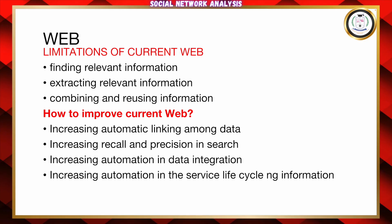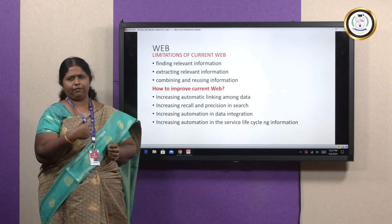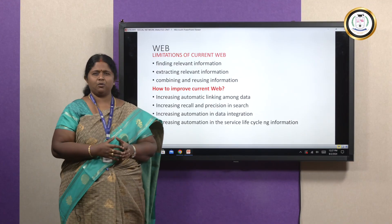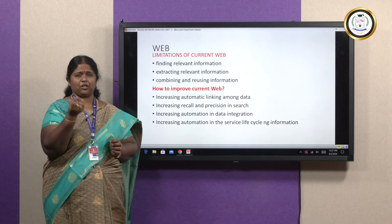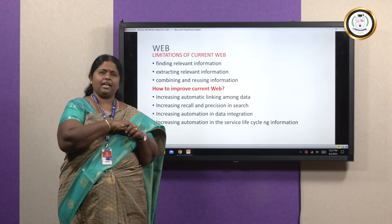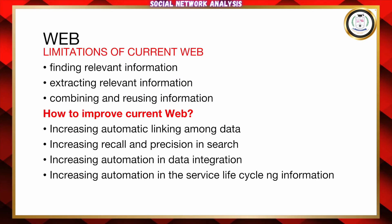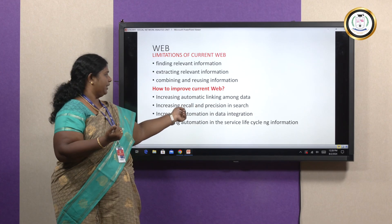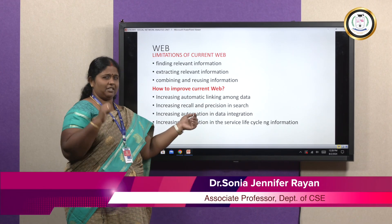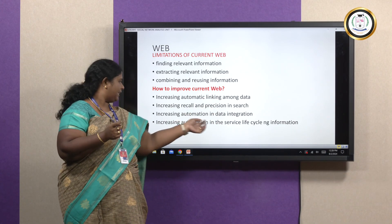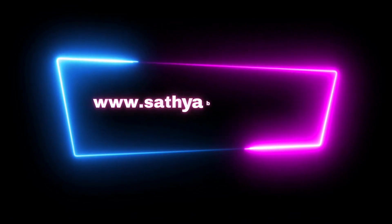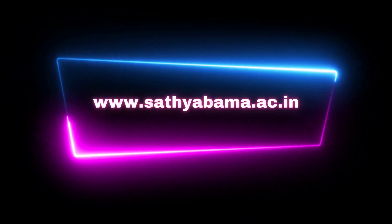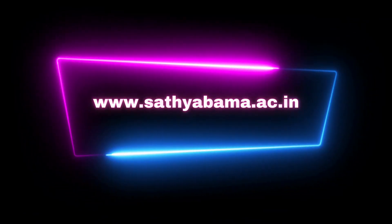To summarize: in case of the existing web, the problems were the ability to retrieve relevant information and combining and reusing information. These become the advantages of semantic web — the ability to retrieve relevant information is improved because of ontologies and RDF. Reusing information becomes easier through automatic linking of data, improving recall and precision, and automation and data integration. This is what happens in case of open and linked data, and increasing automation in the service life cycle. Thank you.